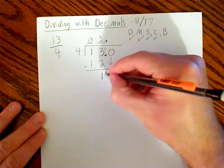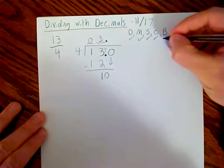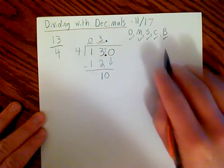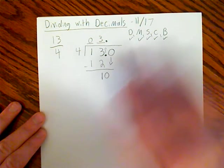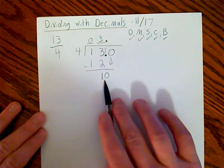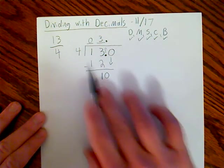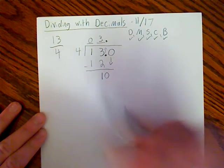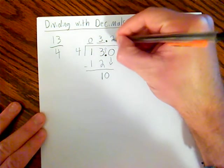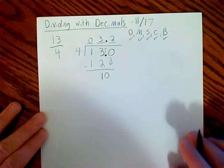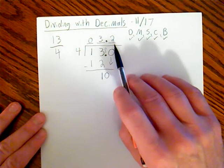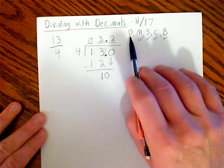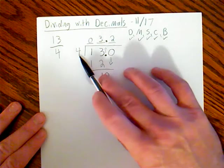I'm bringing that down. Check. Once I bring down my number, I start over again and I do 4 into 10. 4 divided by 10. How many times does 4 go into 10 without going over? Well, it goes in twice. And I forget to add my little footprint in there to make sure that everything's all straight and organized.